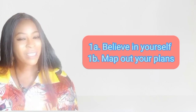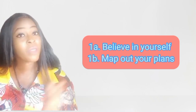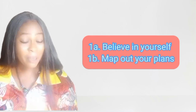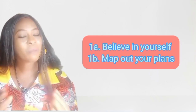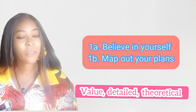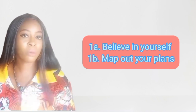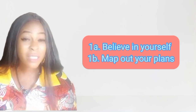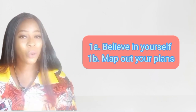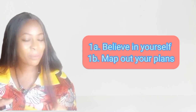Academic writing is of the school. It could be in the form of projects, theses, or publications in a journal. Academic writing is meant to have value, to be detailed, and to be theoretical. You have to choose a theoretical framework that suits your topic. If you're in the arts, you choose a framework from the arts. If you're in the social sciences, management sciences, sciences, or medicine, you choose a theoretical framework that will guide your work. Remember, believe in yourself.